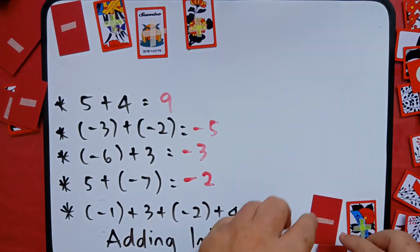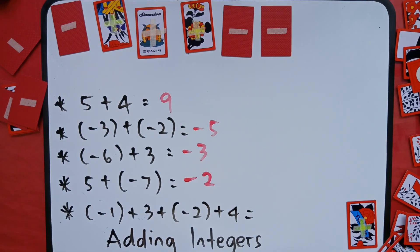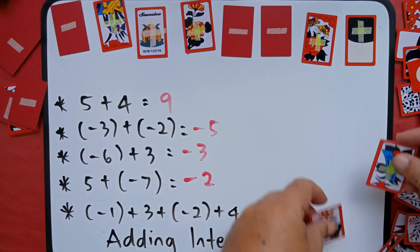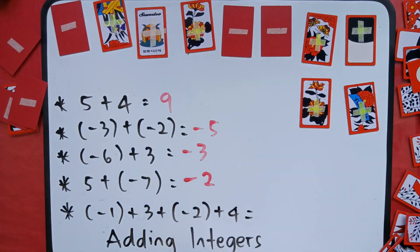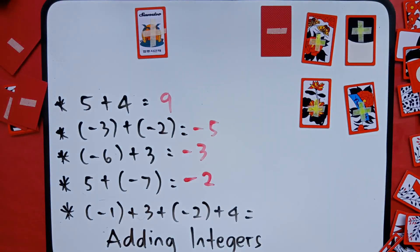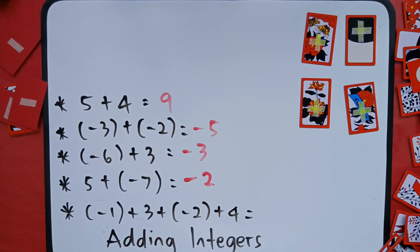Next: negative one plus positive three plus negative two plus positive four. Remove the neutral pairs — remove this pair, this pair, this pair. What remains are four positive tiles.